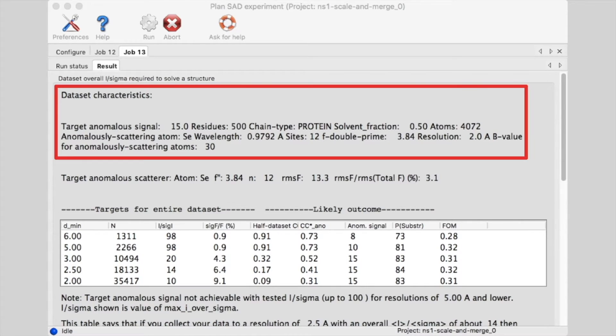It summarizes the information you typed in, along with the characteristics of the anomalous scatterer SE in this case. Notice the F'' value of 3.84, which is quite high.